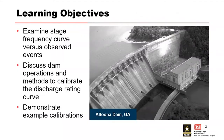In this lecture, we are going to discuss the calibration of the RMC stage frequency curve to historic events. We're going to examine the stage frequency curve and determine if adjustments need to be made to the discharge rating curve used in the reservoir routing. We're also going to briefly discuss various dam operations and methods to calibrate the discharge rating curve, and then step through an example for a project.